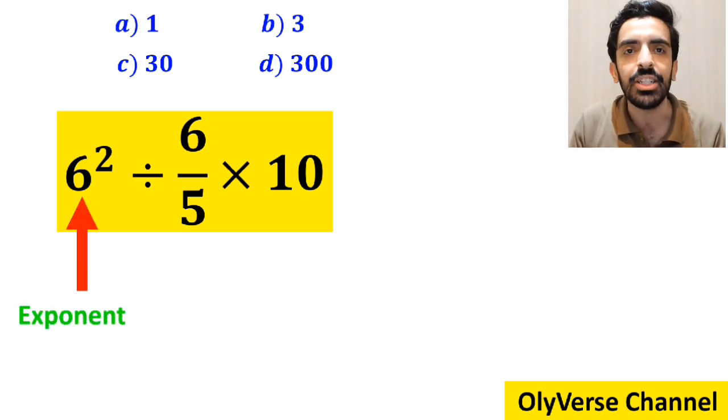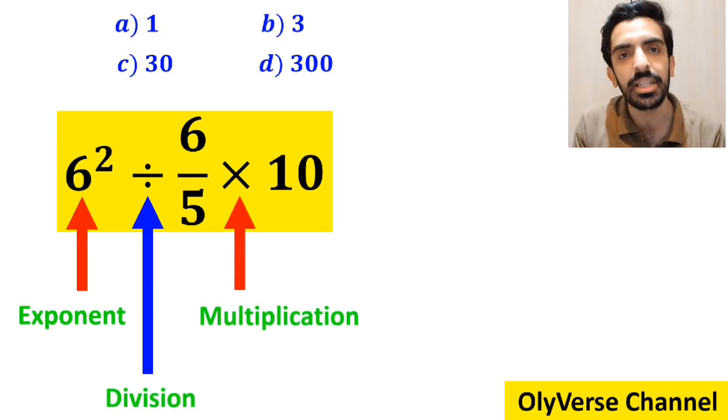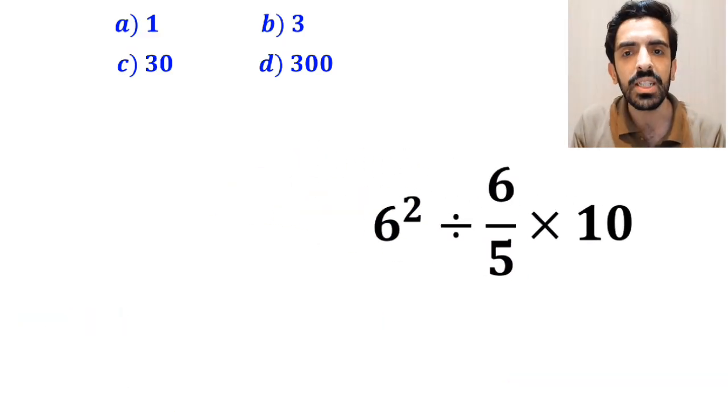As you can see in the image and this expression, first we have an exponent, a division sign, then a division sign, and finally a multiplication.